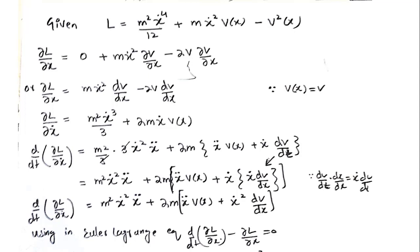The first term does not contain x, so when I differentiate it with respect to x this term will go to zero. In the second term I will get m x dot square partial v by partial x minus 2v into partial v by partial x, because it is given in the question that v is a differentiable function of x.